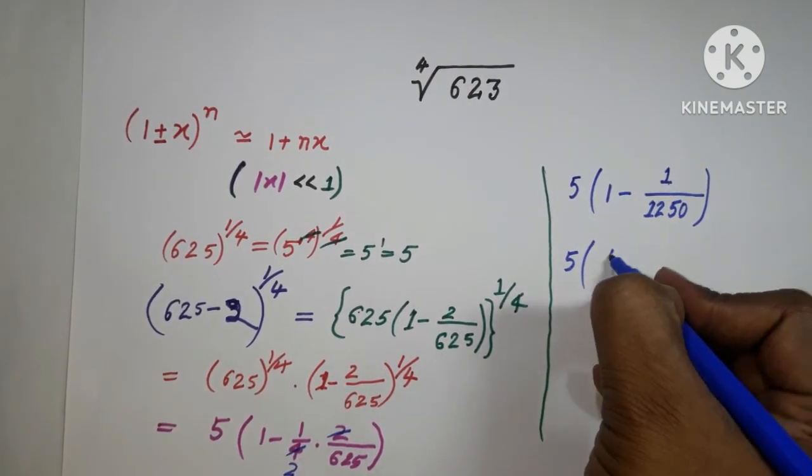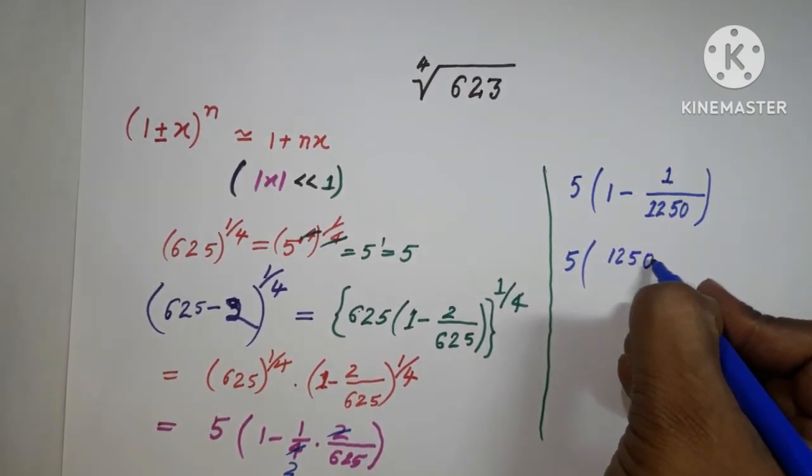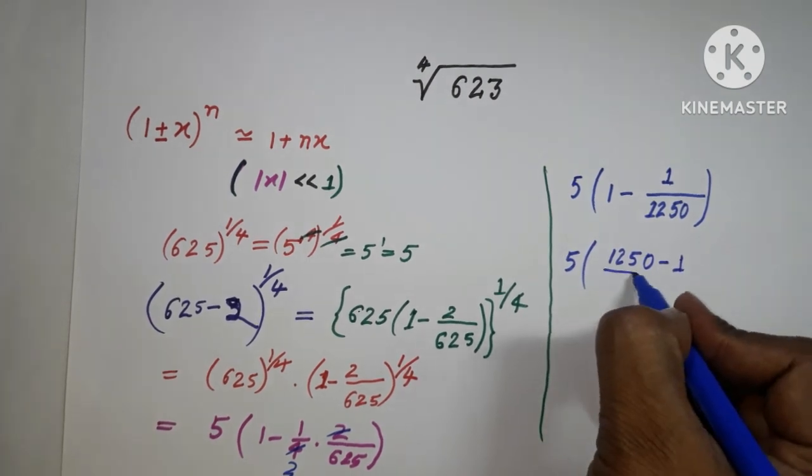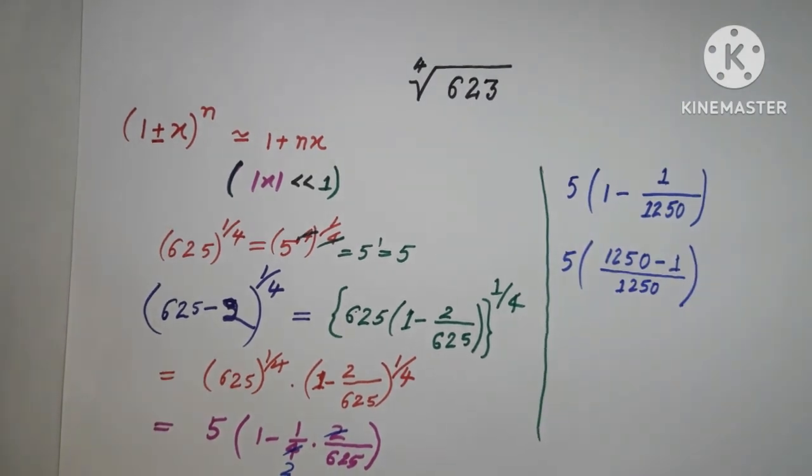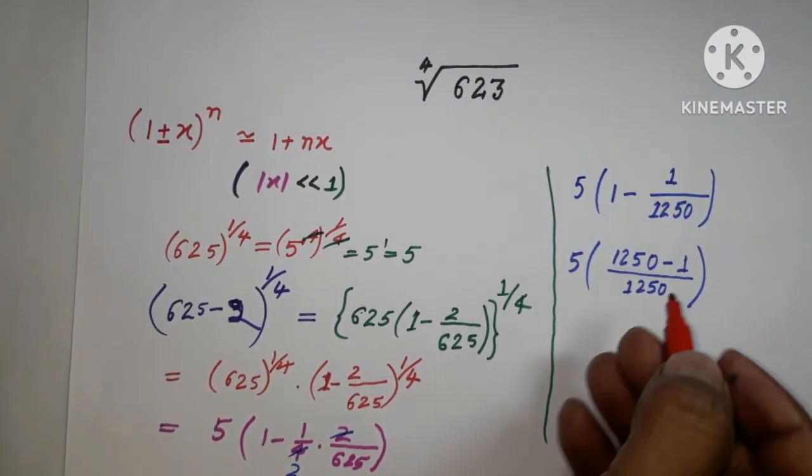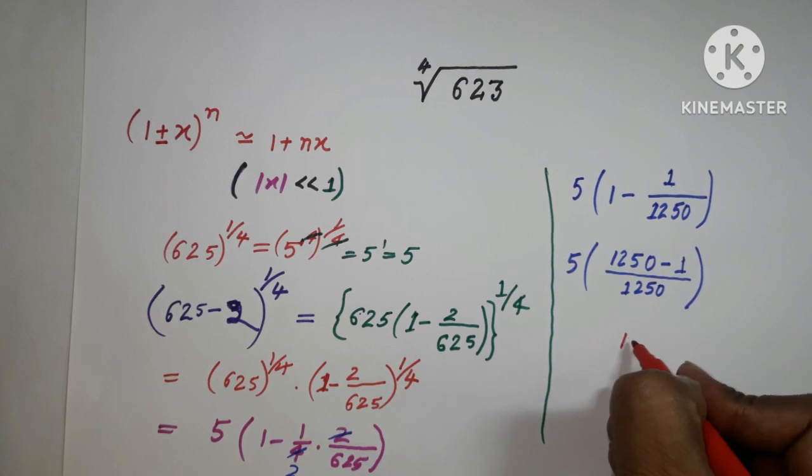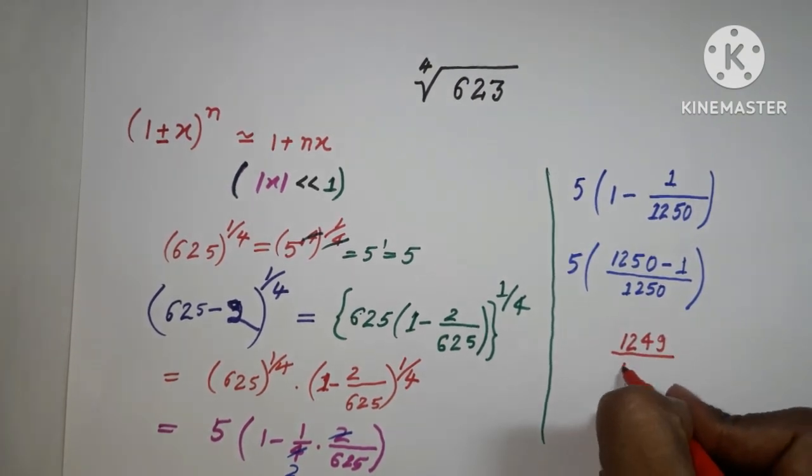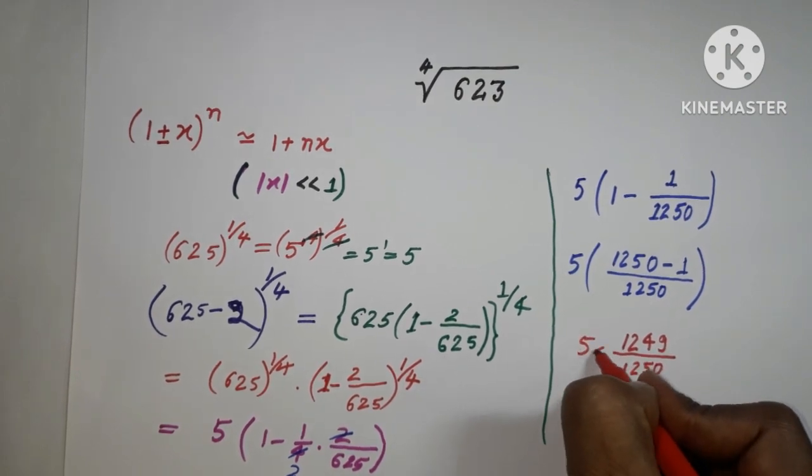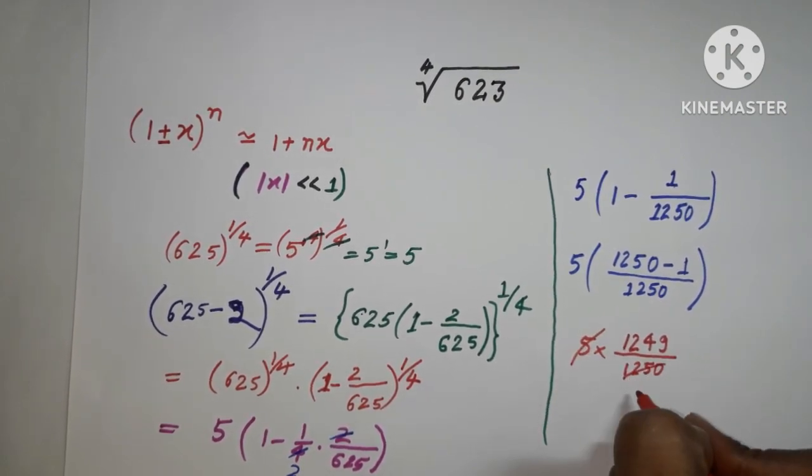After solving, 1250 minus 1 divided by 1250 gives us 1249/1250. So we have 5 × 1249/1250. The 5 cancels, giving 1249/250.